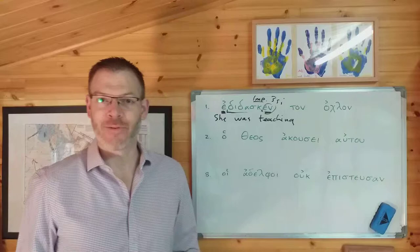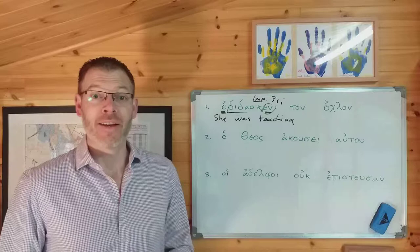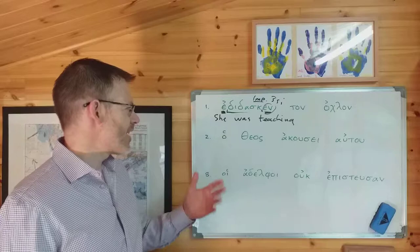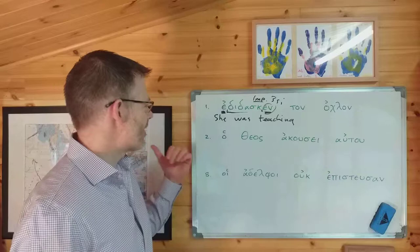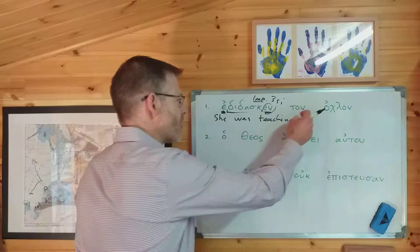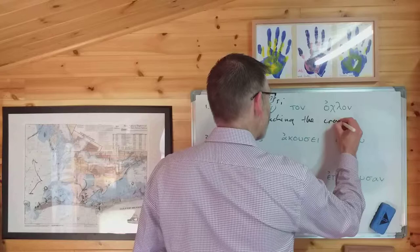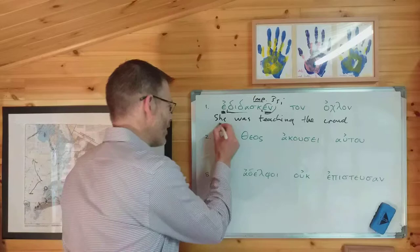That's distinct from the aorist — the other past tense — where you want to say an action happened in the past but you don't want to say it's extended in time, in which case you just say 'she taught.' So edidasken — she was teaching. Is there a separately lexicalised subject in the nominative? No. Is there an object? Yes. Ton ochlon is 'the crowd.' So he, she, or it was teaching the crowd. Duff has gone for 'she was teaching the crowd.' Very good. That's number one.